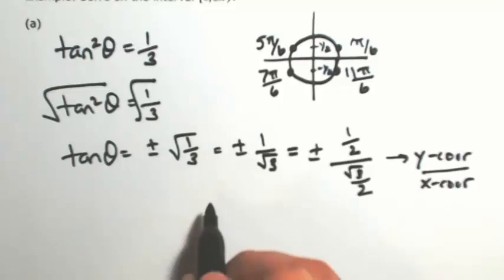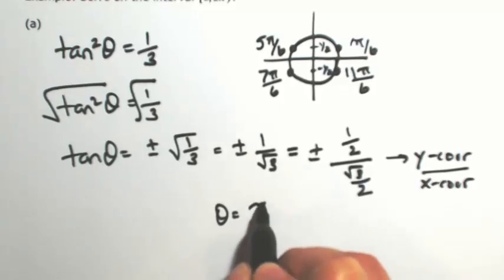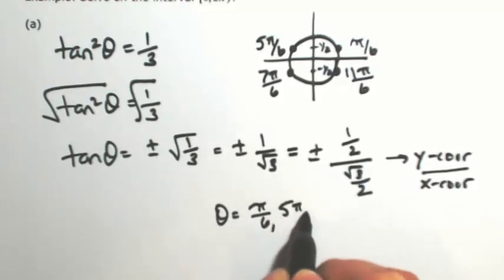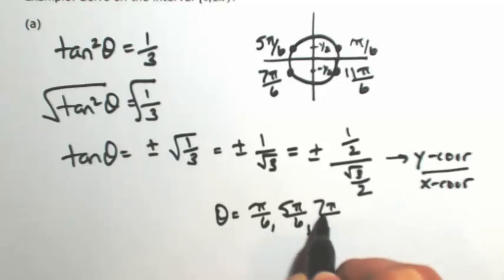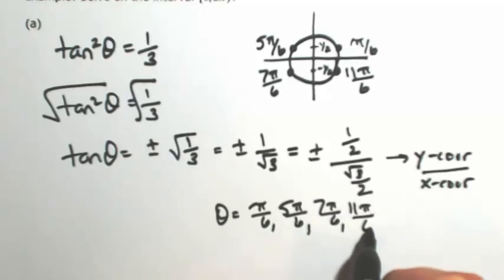Okay, so this one actually has four answers. So theta is pi over 6, 5 pi over 6, 7 pi over 6, or 11 pi over 6.